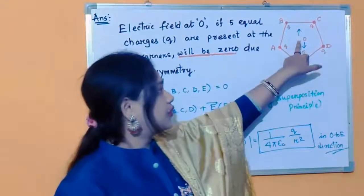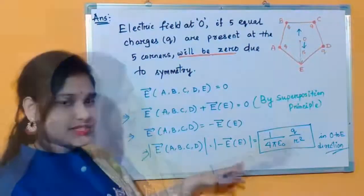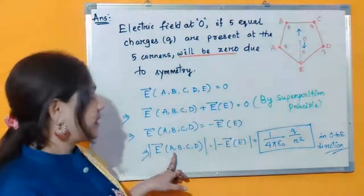What is the meaning of this? Electric field at O due to E is simply equal to 1 by 4π epsilon 0 Q by R squared, which is equal to the electric field of A, B, C, D.